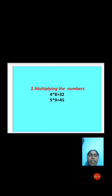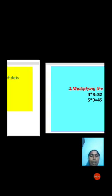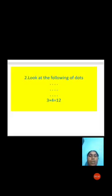In the previous class we already learned about multiplying numbers and multiplying algebraic terms. Here are some examples. First, Multiplying the Numbers: 4 × 8 = 32 and 5 × 9 = 45. Second, look at the following arrangement of dots — there are 3 columns and 4 rows, so 3 × 4 = 12 dots.